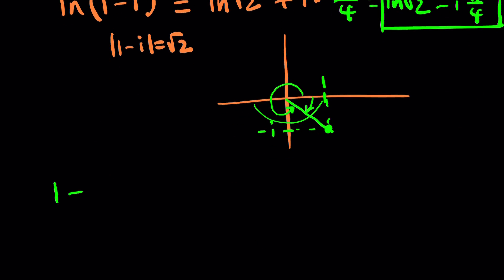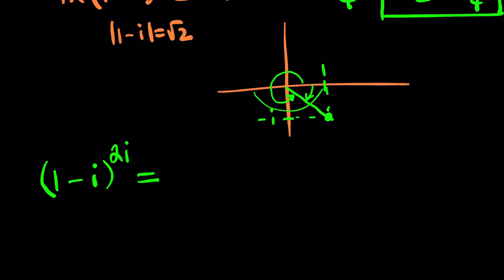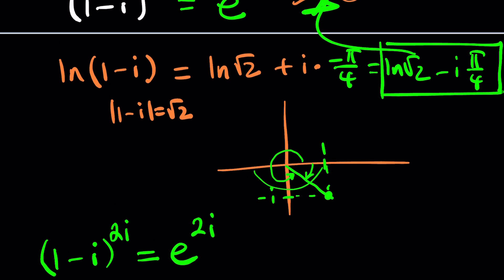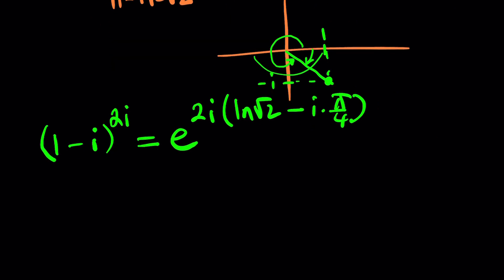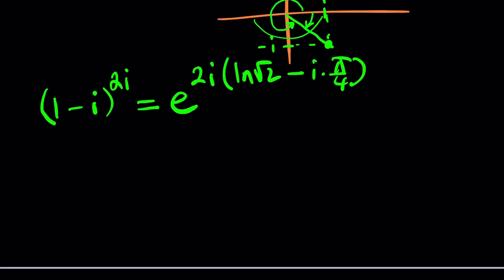But let's go ahead and substitute that. So 1 minus i, again, going back to the beginning, to the power 2i equals e to the power 2i multiply by ln, this ln root 2 minus i times pi over 4. How awesome is that? After doing this, I'm going to show you an alternative approach. Do you think that's going to work? Anyways, let's finish this first.